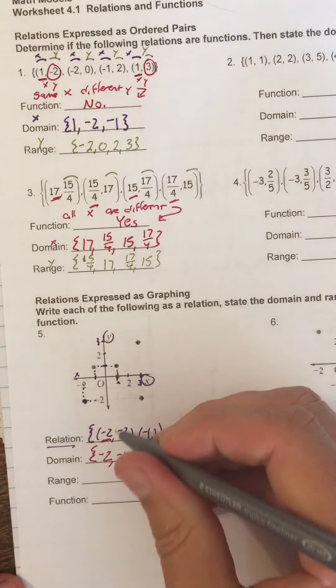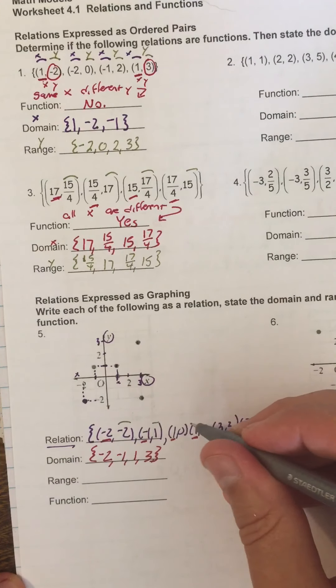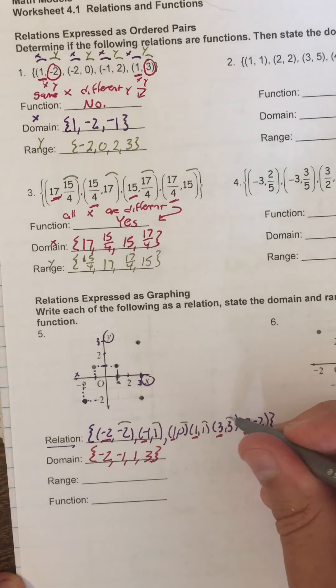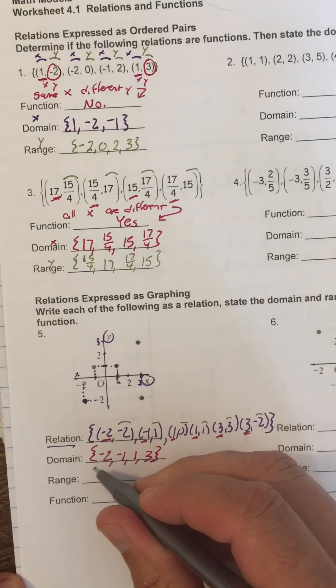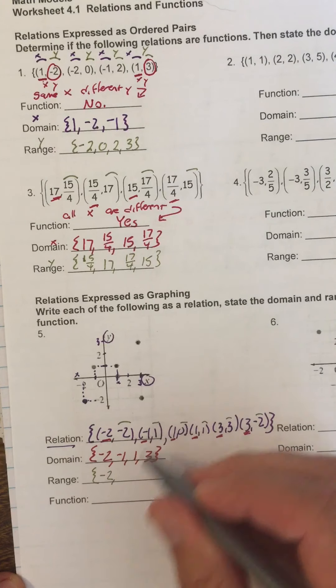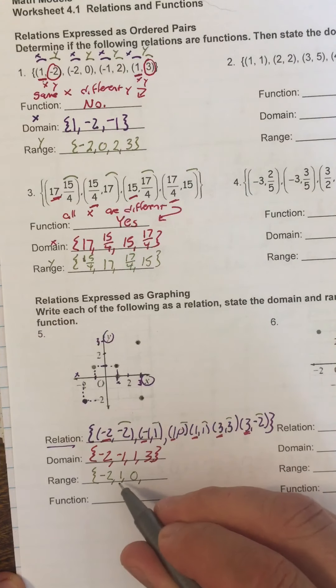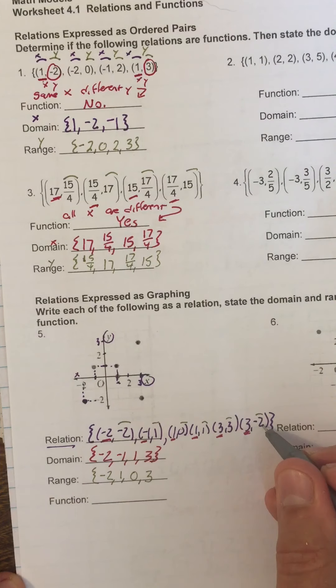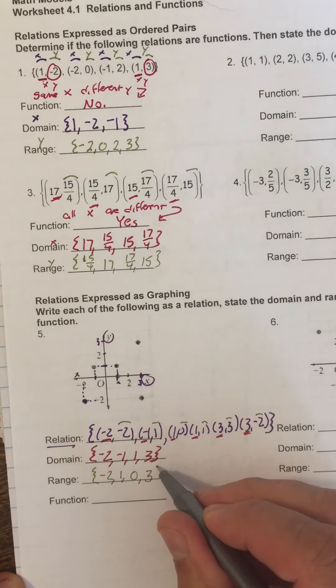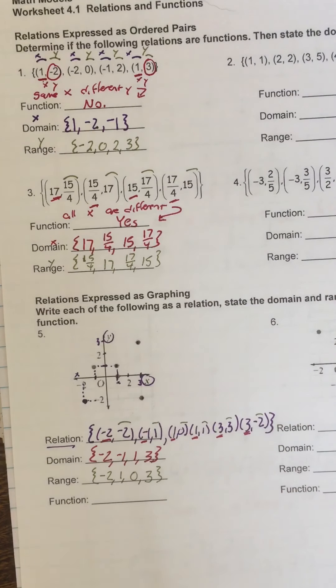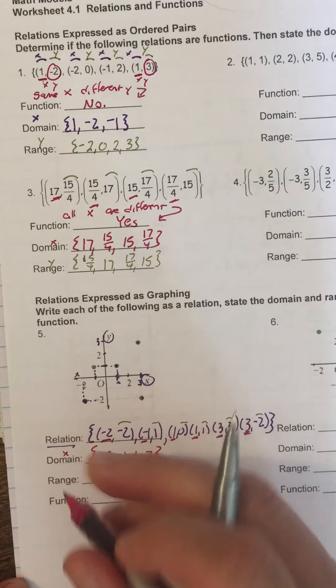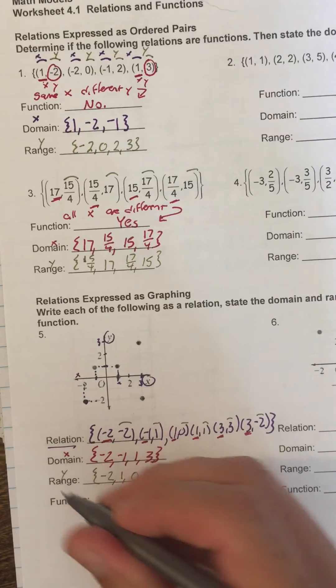Okay, what are the y's? Negative 2, 1, 0, 1, 3, negative 2. So the y's are negative 2, 1, 0, 1. We already have 1. 3, and negative 2, but we already have negative 2. So we can close it. So you just have to remember, and you have to remember this. Domain is the x, range is the y.